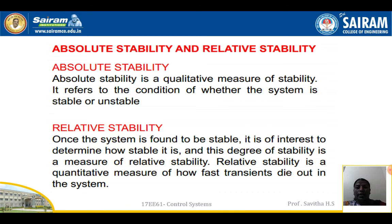Absolute stability and relative stability. Absolute stability is a qualitative measure of stability — it refers to the condition of whether the system is stable or unstable. Relative stability: once the system is found to be stable, it is of interest to determine how stable it is. This degree of stability is a measure of relative stability. Relative stability is a quantitative measure of how fast transients die out in the system.